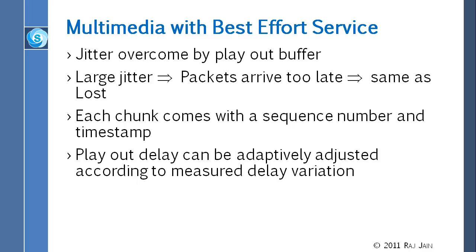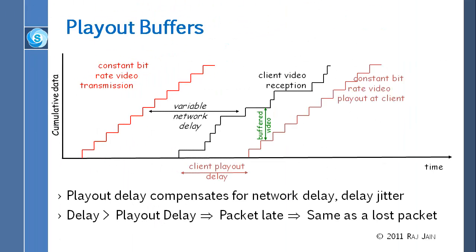Playout delay can be adaptively adjusted according to the measured delay variation. When we start a new connection, we observe the variability for the first five or ten packets and accordingly set when we will start the first packet — whether we need ten seconds, two seconds, or one minute of video buffered. That is determined by how much variability is seen. Most video we want to watch is 30 frames per second, which is 33 milliseconds per frame.